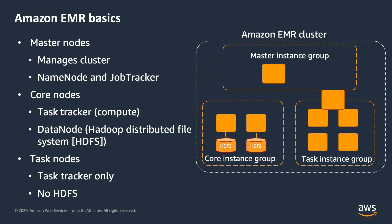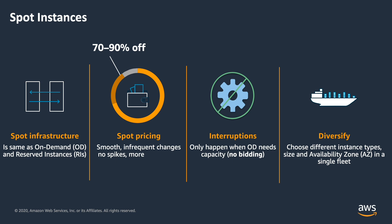A spot instance is an unused EC2 instance that is available for less than the on-demand price. When you launch a cluster in Amazon EMR, you can choose to launch master, core, or task instances on spot. The infrastructure provided through spot is the same as on-demand and reserved instances. Pricing is often 70 to 90% off with smooth, infrequent changes and no spikes, and interruptions are only limited. There is also a diverse portfolio of instances to choose from in the spot instance pool.